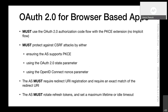The draft currently says apps must use the auth code flow with PKCE — in other words, must not use the implicit flow — and must protect against CSRF attacks. Options include ensuring the authorization server supports PKCE, using the state parameter, or using the OpenID Connect nonce parameter if the app is also using OpenID Connect. This includes exact redirect URI matching from the authorization server and recommendations on refresh tokens from the security BCP. Most of this is done by referencing the security BCP.